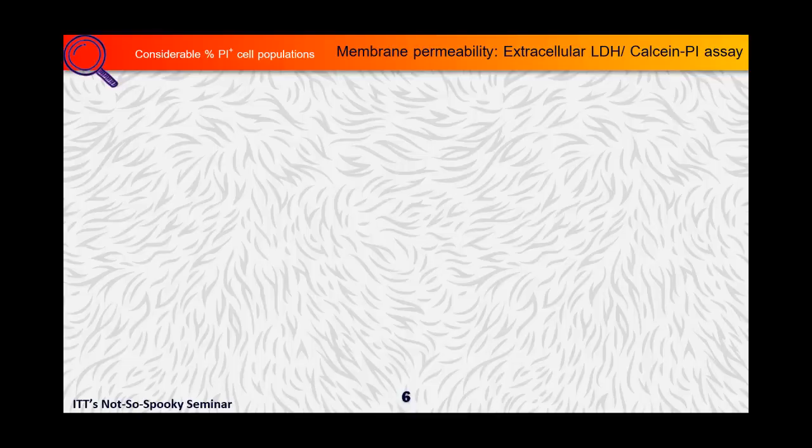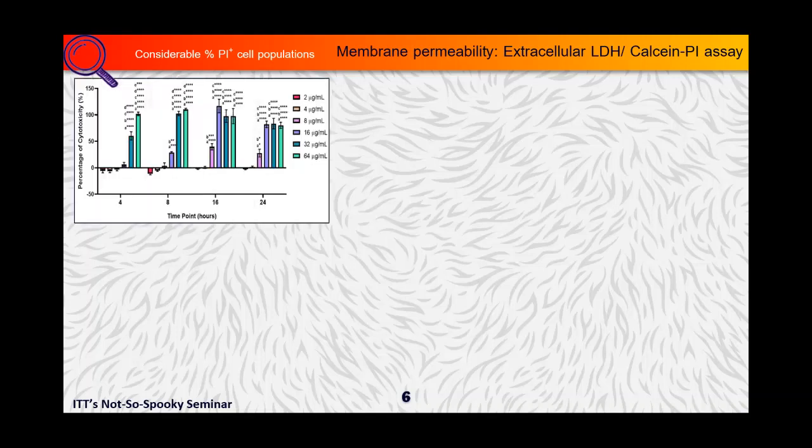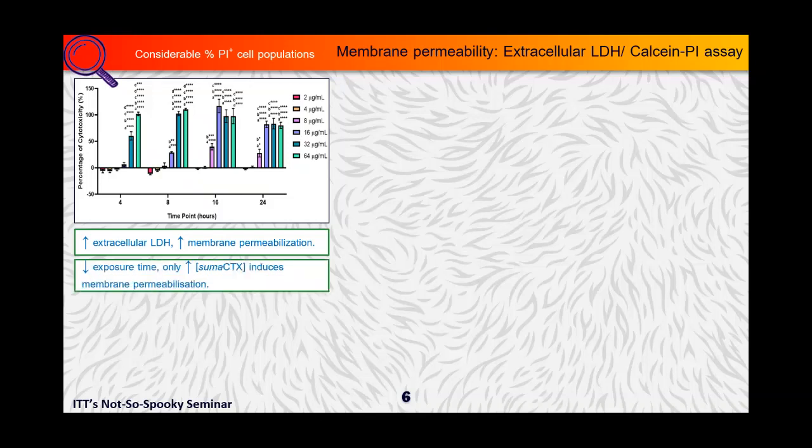We did not just stop here, since considerable percentage of PI-positive populations are observed and it did not indicate occurrence of primary necrosis. We examined the degree of membrane permeabilization by measuring the LDH, extracellular LDH levels, which is an indicator of membrane permeabilization, and then further supported with the fluorescence dye, calcein and PI.